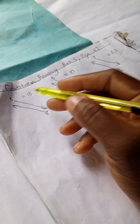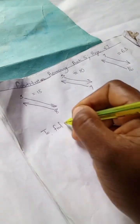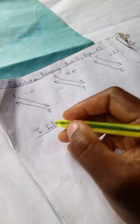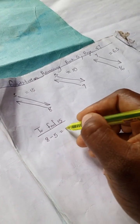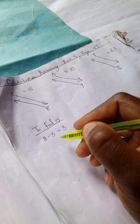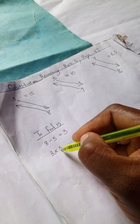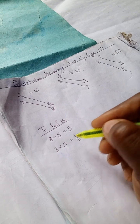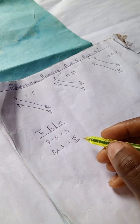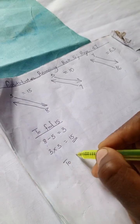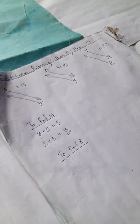Alright, let's get to it. For this example, let's work on finding 15. To find 15, we're going to have 8 minus 5 equals 3, and then 3 times 5 equals 15. So 8 minus 5 equals 3, and 3 times 5 equals 15.